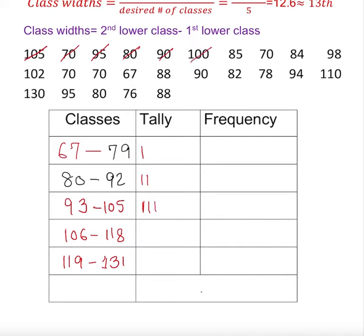95 on the third one, 80 on the second one, 90 also on the second one, 100 on the third one again. I can start here, 88. I can cross it out. That's the beauty of tally. 88 is the third one, 76 is the first one, 80 is the second one, 95 is the third one.